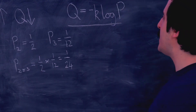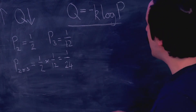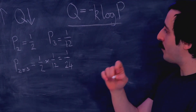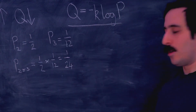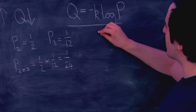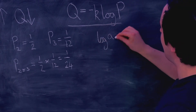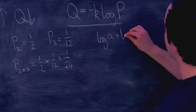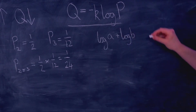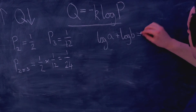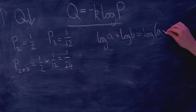Let's see how this works in an additive sense. One of the rules of logarithms is that log A plus log B equals the log of the product A times B.